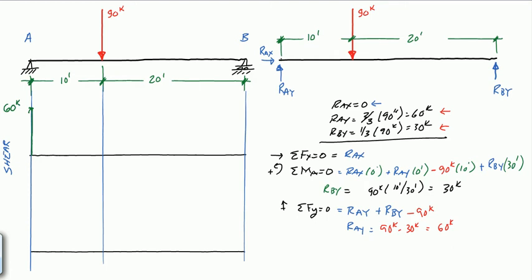The change in shear between two points equals the area of the load diagram. From point A to the point of load, there is no distributed load, so the change in shear is zero — we draw a horizontal line straight across, staying at 60 kips. At a point load, we get an abrupt change in shear equal to the magnitude of the point load. We have 90 kips going down, so we go down 90 kips.